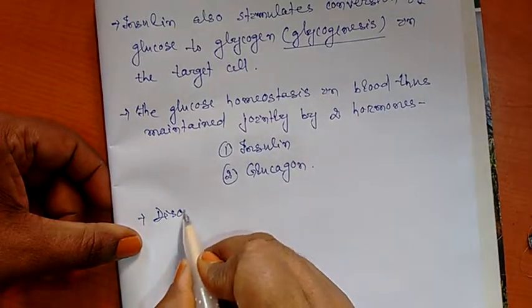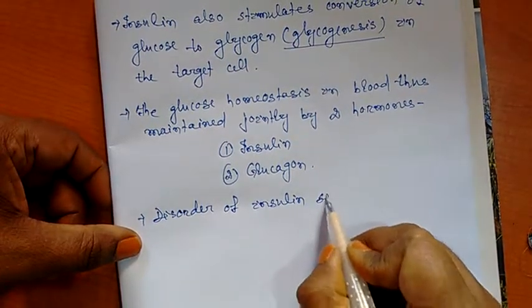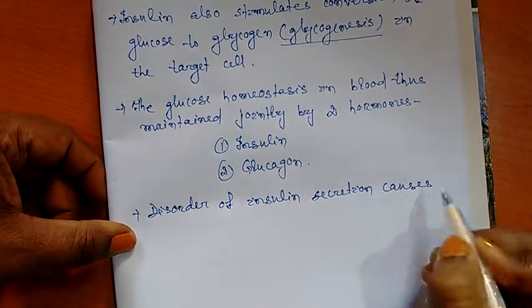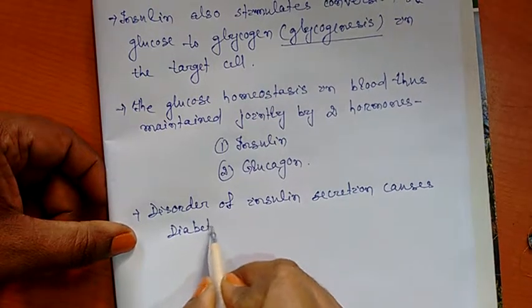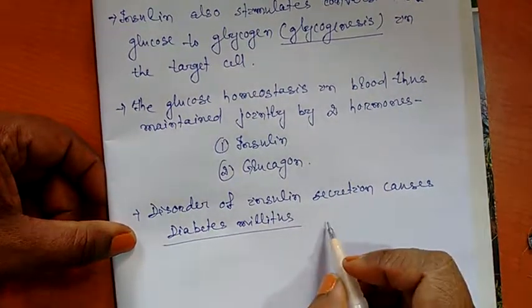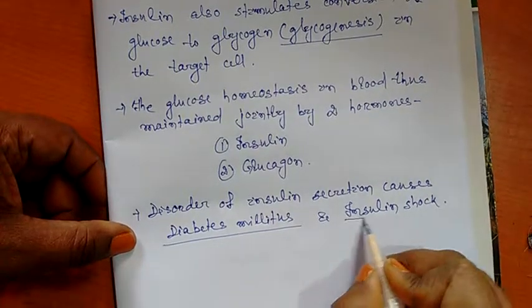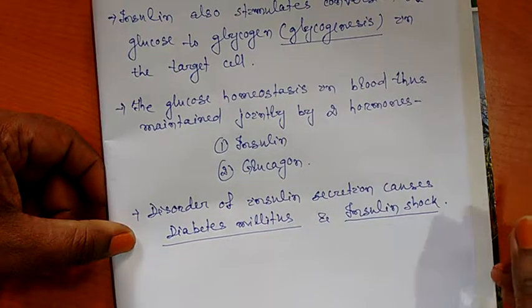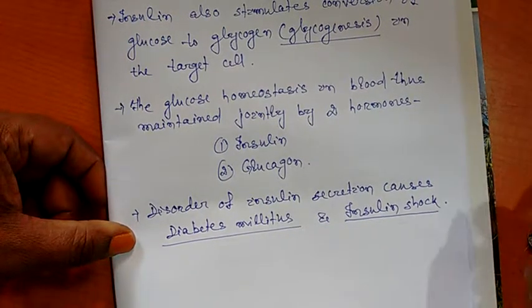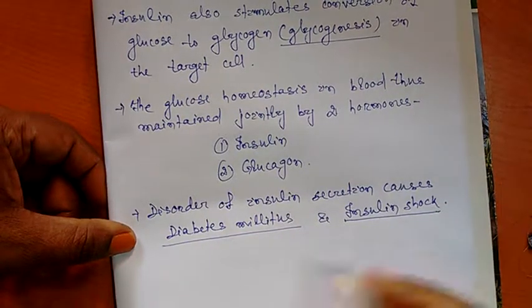Disorder of insulin secretion causes diabetes mellitus and insulin shock. Diabetes mellitus is caused due to dysfunction or lack of optimum secretion of insulin. Insulin shock is a sudden drop in sugar in the blood.